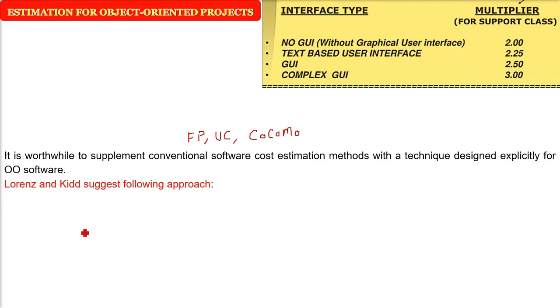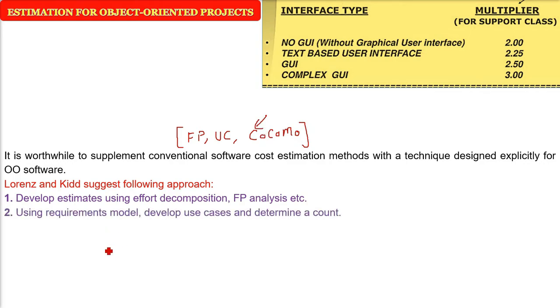Lorenz and Kidd suggest an approach for estimating object-oriented project time, effort, duration, person-months, and cost. First, using the requirement model, develop estimates using effort decomposition, FP analysis, etc. Then use the requirement model to develop use cases and determine the count of these use cases.